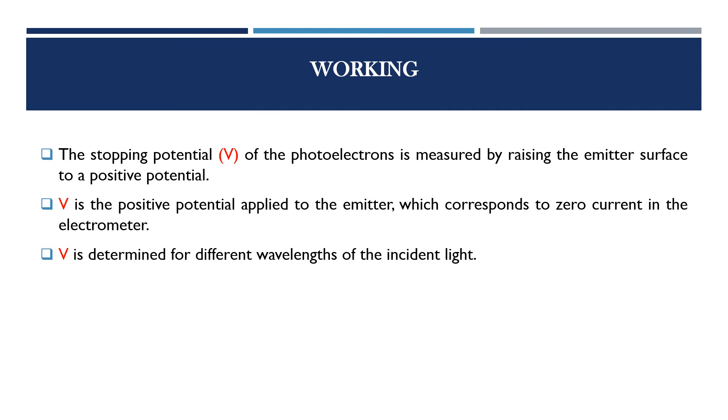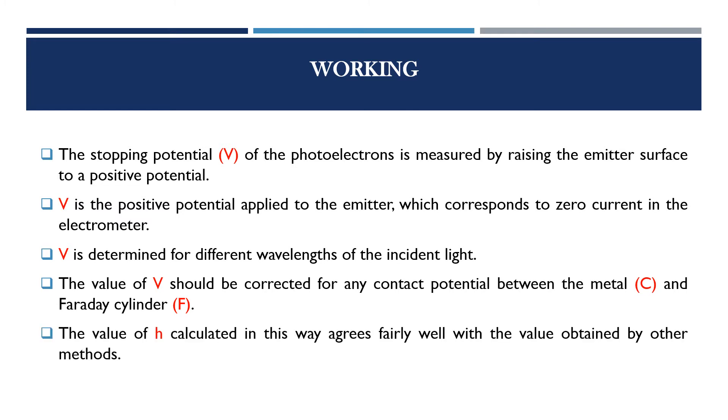Potential V is determined for varying the different wavelengths of the incident light. The value of V should be corrected for any contact potential between the metal C and Faraday cylinder F. Through this procedure, finally we calculate the h value, which agrees fairly well with the value obtained by other methods also.